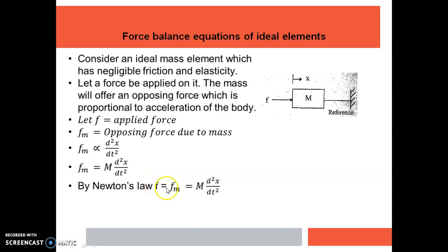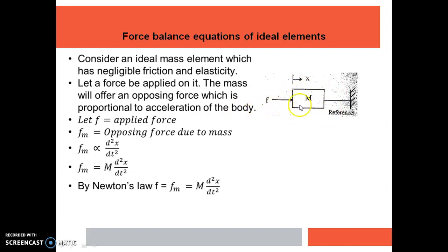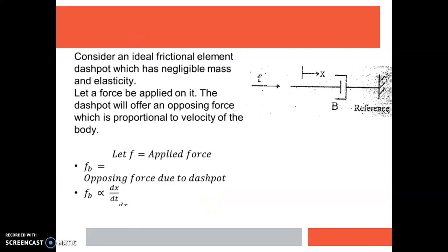We know that the applied force equals the opposing force, so F equals Fm. For this particular case, there are no other opposing forces because we are considering an ideal mass element with negligible friction and elasticity. Therefore, F equals Fm equals M times d²x/dt². This is the force balance equation for the mass element.